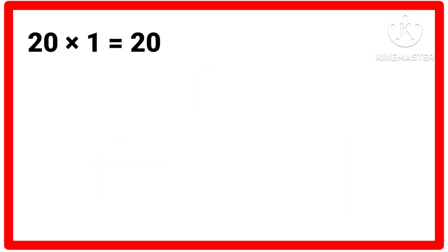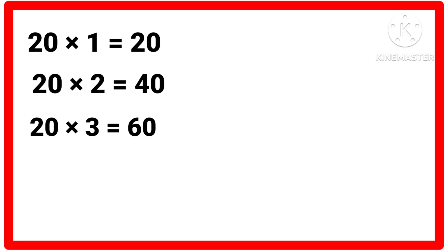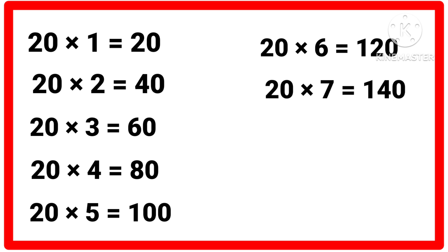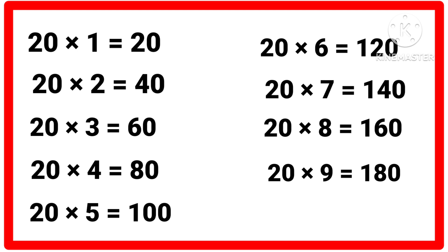Table of 20. 20 ones are 20, 20 twos are 40, 20 threes are 60, 20 fours are 80, 20 fives are 100, 20 sixes are 120, 20 sevens are 140, 20 eights are 160, 20 nines are 180, 20 tens are 200.